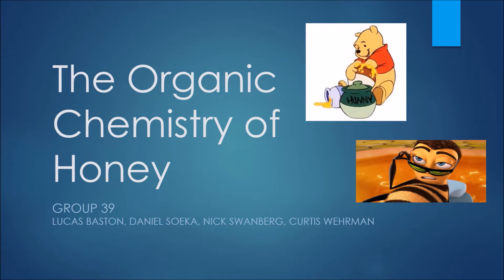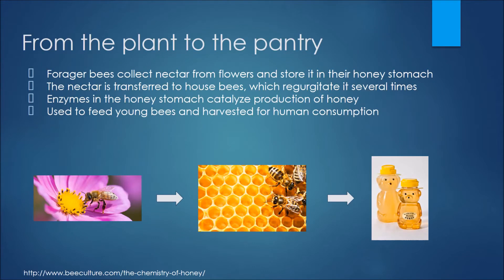Today, we are going to discuss the organic chemistry of honey, which includes the reactions that produce honey and its unique chemical properties. First, we'll provide a general understanding of how honey is made. Some of the bees in a colony called forager bees obtain nectar from flowering plants and store it in their crop or honey stomach. They return to the colony and transfer the nectar to house bees, who regurgitate several times over about 20 minutes. During this time, enzymes produced by the bees catalyze the production of honey in the honey stomach. The final product is then used as food to raise the young members of the colony, or is harvested by humans to end up in our stores and homes.